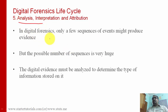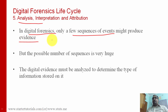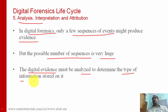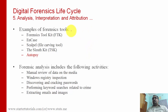In the analysis phase, only a few sequences of events might produce evidence in the digital forensics process. Even if you gather evidence in different pieces, if you can't combine them, you can't prove whether the crime happened or not. The number of possible sequences is very large. Digital evidence must be analyzed to determine the type of information stored on it. Some examples of forensic tools are Forensic Toolkit, EnCase, Scalpel, The Sleuth Kit, and Autopsy — Autopsy is free and you can download and use it.